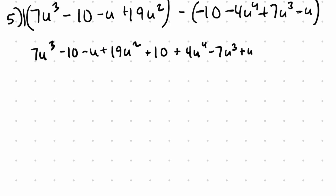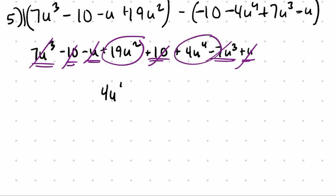Now we have all these terms, and we add them or combine them. So I have positive 7u cubed plus negative 7u cubed. They cancel out. You have one negative group of u and one positive group of u. They cancel out. You have 10 and subtract 10. Those cancel out. And finally, you have 19 groups of u squared and 4 groups of u to the 4th. So we'll write it in standard form with the largest power first. 4 groups of u to the 4th plus 19 groups of u squared.